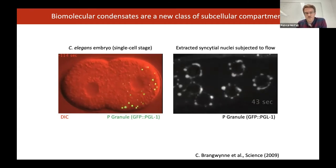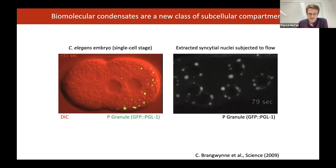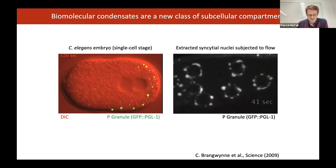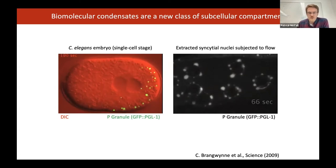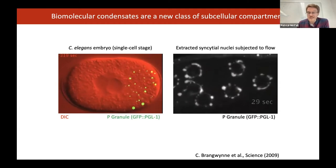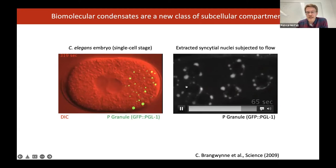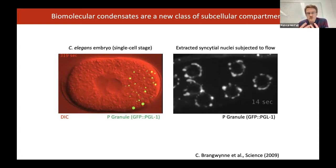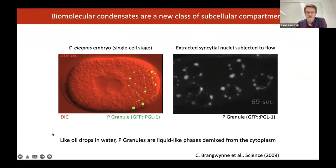The cell that will become the cell on the right-hand side is enriched in these P granules that were initially distributed everywhere. These have been observed for decades, and we knew a lot about them. But what we didn't realize until 2009 was that they behave like liquids. Under shear stress, they deform and flow and drip and merge and fuse, very much like liquids. This prompted a rethinking of the physical basis for their formation.